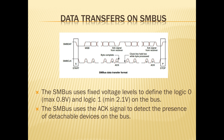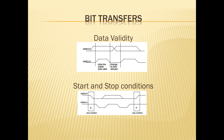The data transfers on the SMBus happen as shown in the figure. The data is read on the positive edge of the clock cycle and is ignored at the negative edge of the clock cycle. The data changes take place on the negative edge of the clock cycle. The SMBus uses fixed voltage levels to define logic zero and logic one on the bus. The SMBus also uses an acknowledgment signal to indicate the completion of the data transfer between the devices. The data validity can be seen in the data validity figure.